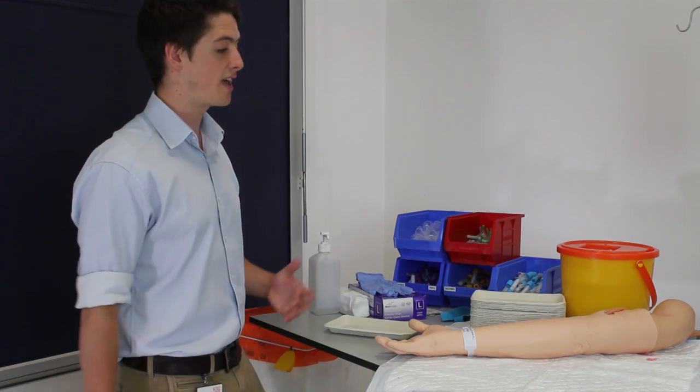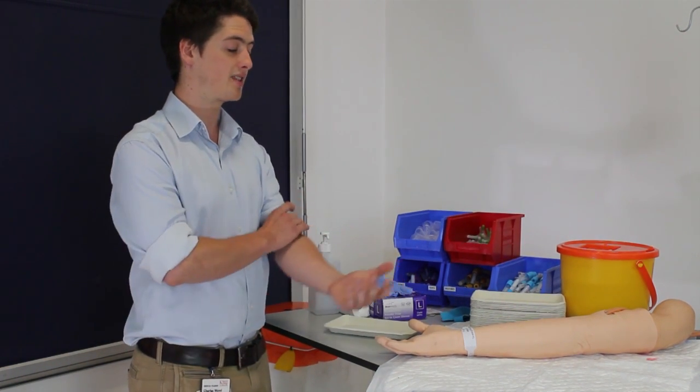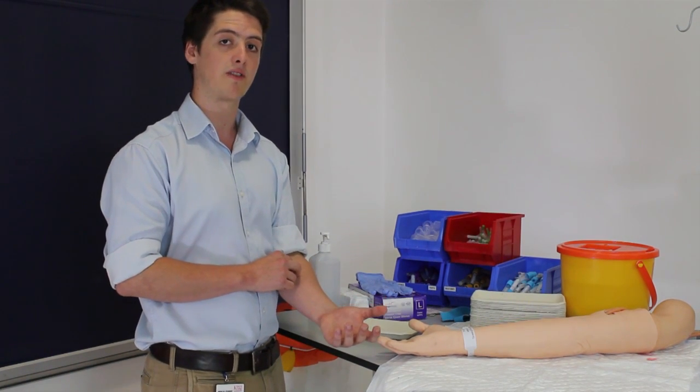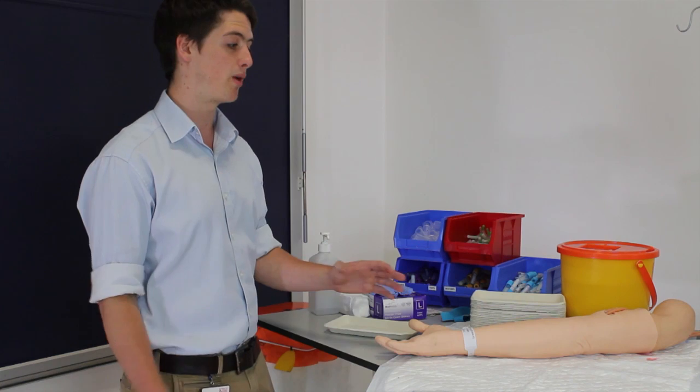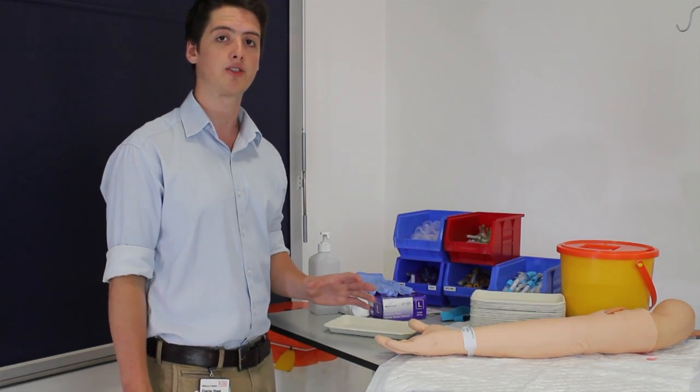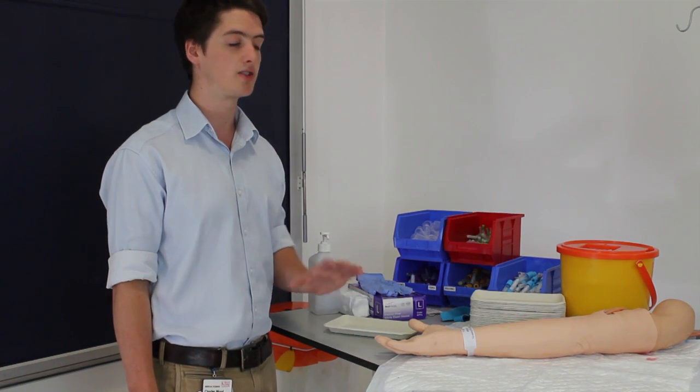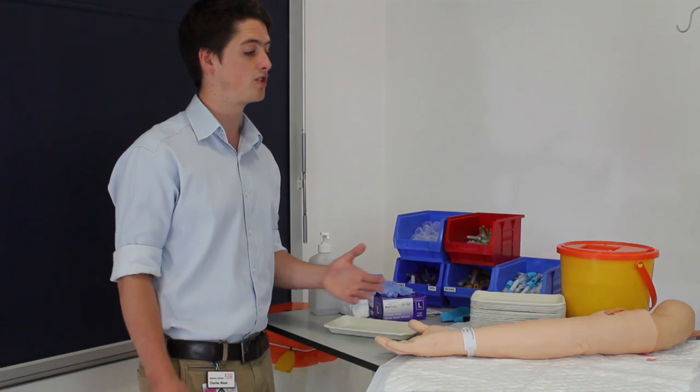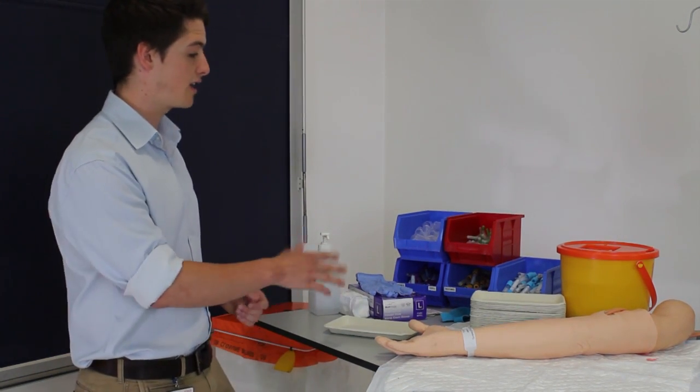Once you've done that, you can explain the procedure to the patient. Just let them know that it will involve having a tight band placed around the arm and they'll feel a sharp scratch as a needle is put into one of their veins. You'll then take some blood, remove the needle, and put a dressing on. It might be quite uncomfortable but it shouldn't be painful at all, and if it is they should let you know and you can stop whatever it is that you're doing. Once you've done that, just ask if it's all right for you to speak aloud to your colleague as you go if you're being supervised, and then tell them that you're going to gather some equipment.